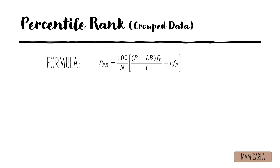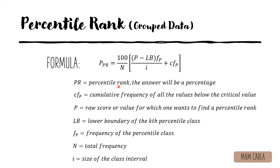We also have a formula for solving the percentile rank of grouped data: P_PR equals 100 over n times the quantity of (P minus LB) times f_P over I, plus CF_P. Here, PR is the percentile rank expressed as a percentage. CF_P is the cumulative frequency of all values below the critical value. P is the raw score for which we want to find the percentile rank. LB is the lower boundary of the kth percentile class. f_P is the frequency of the percentile class. N is the total frequency, and I is the size of the class interval.